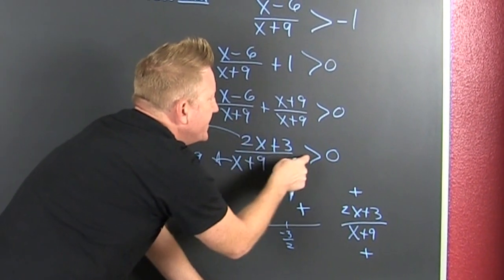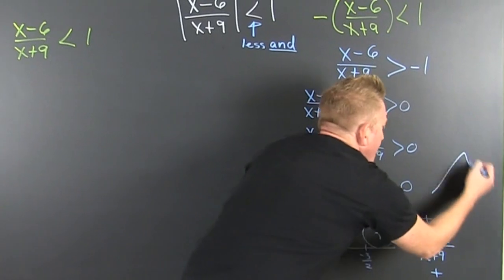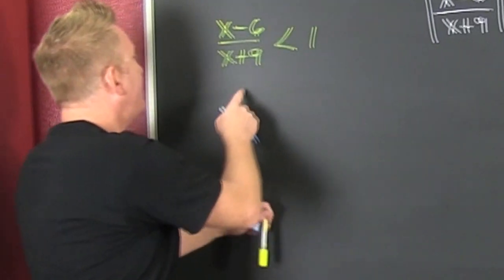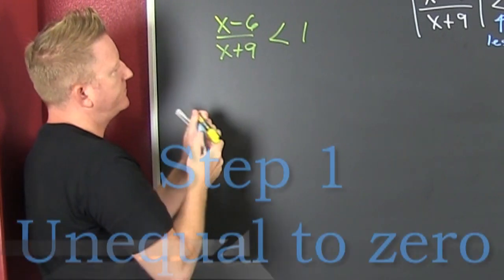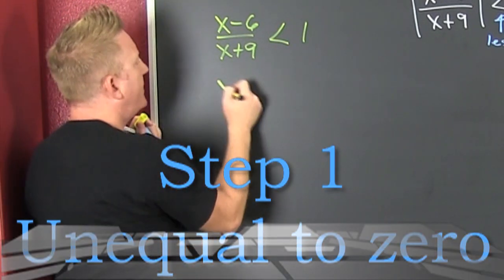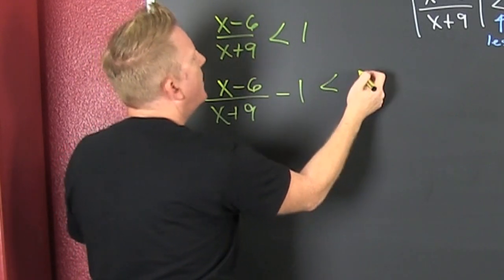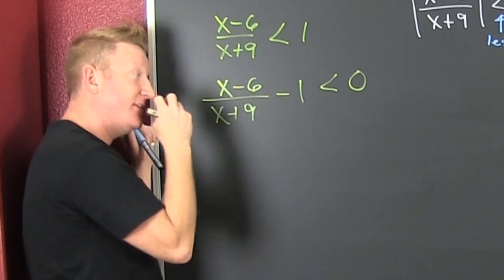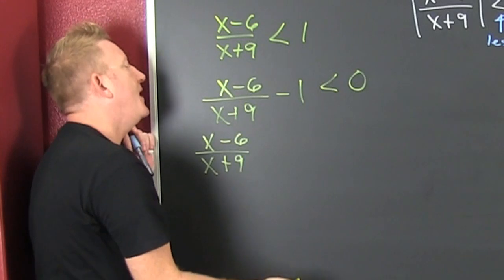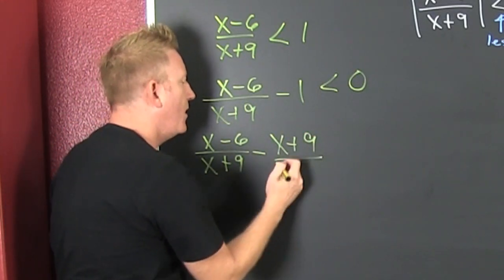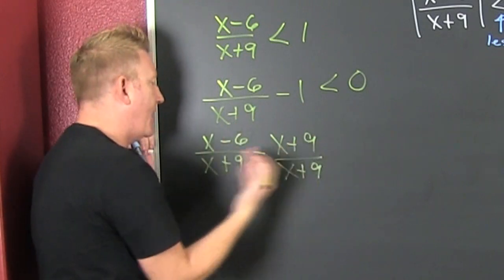So what do I want? I want where this is greater than zero — that's the positive regions: to the left of negative 9, and to the right of negative three-halves. Now I need to deal with Case 2. I get it all on one side: (x minus 6) divided by (x plus 9) minus one, needs to be smaller than zero, because I subtracted one off each side.